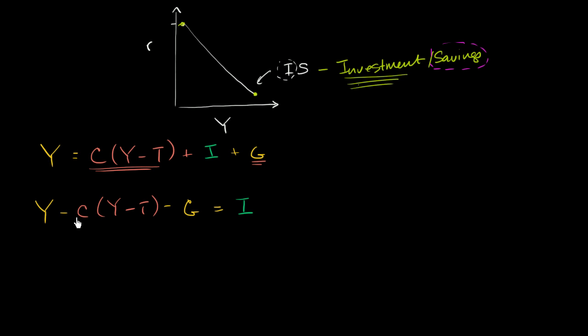And this thing right over here is interesting, because this is total income minus—let me make sure we don't confuse you, because that looks like a lower case c, and if we're talking about aggregate consumption, it's usually an upper case c. So on the left hand side, we have total aggregate income, minus consumer spending, minus government spending. So you could really view this as aggregate savings.